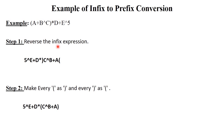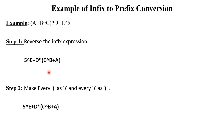Step 1: reverse the infix expression. Write the given expression in reverse format — for example, 5 exponential E plus D. Step 2: interchange the brackets — every open round bracket becomes a close round bracket and every close round bracket becomes an open round bracket.